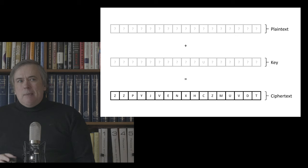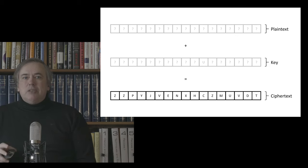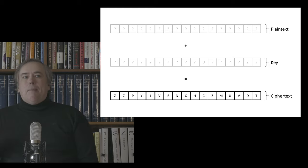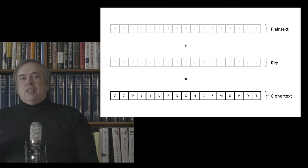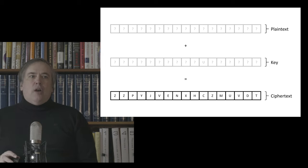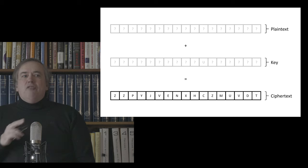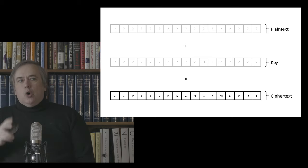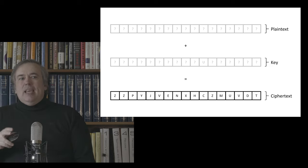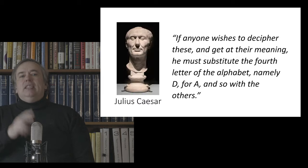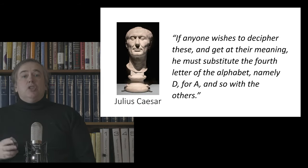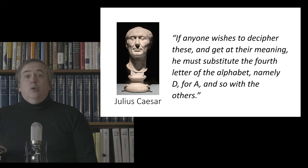One-time pads turn out to be breakable in practice. To understand why, we need to go back and look at Caesar ciphers. The Caesar cipher was mentioned by Suetonius, who said that if Caesar had something confidential to say, he wrote it in cipher by changing the order of the letters of the alphabet so that not a word could be made out — substituting the fourth letter D for A, and so on.